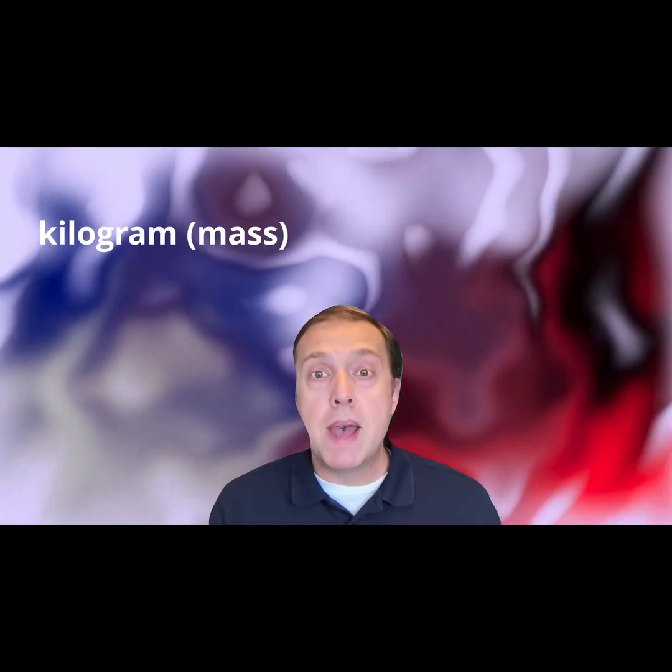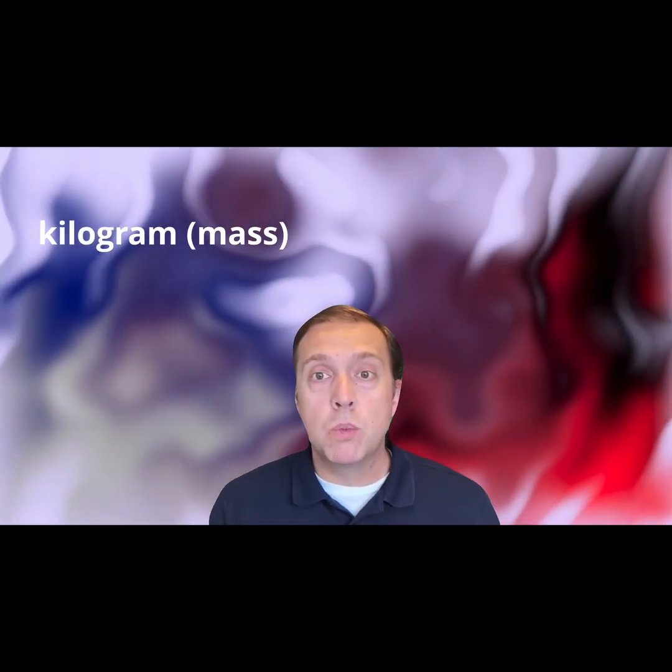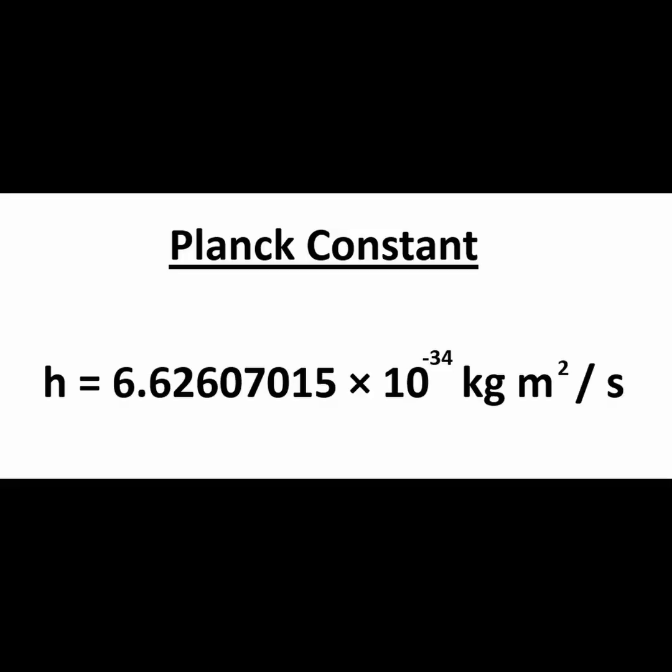In order to define mass in units of kilograms, we start with the definition of the Planck constant, which we choose to be h equal to 6.62607015 times 10 to the power of minus 34 kilograms meters squared per second.